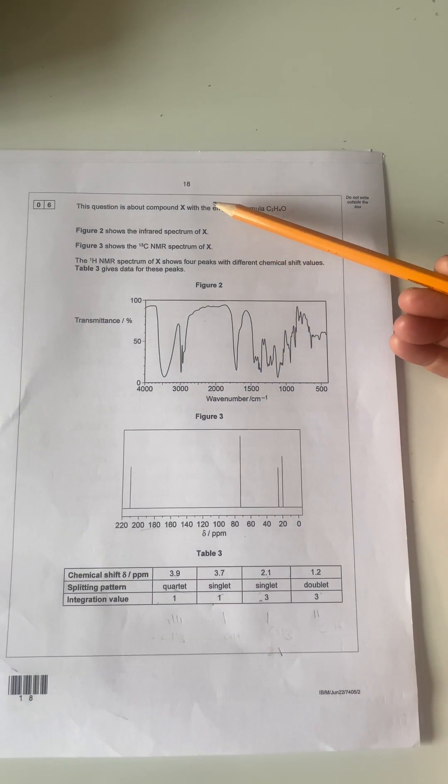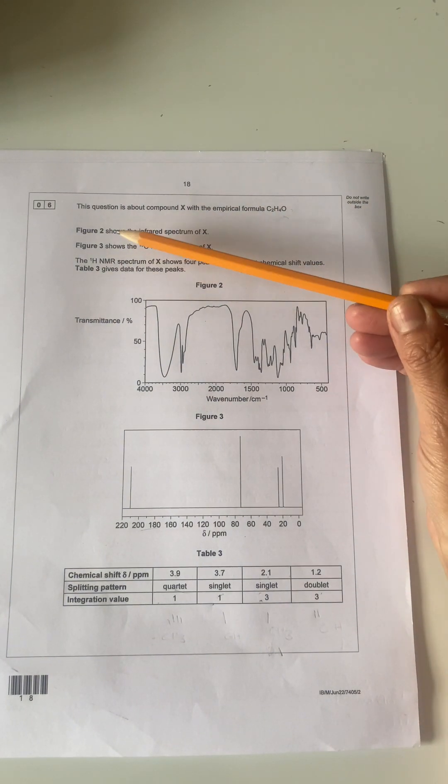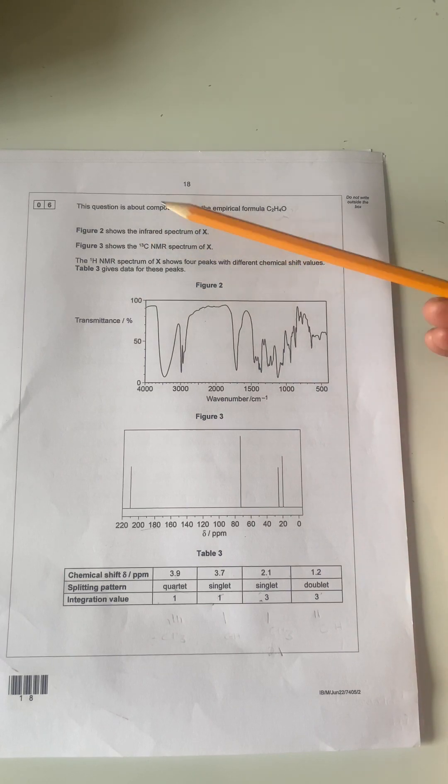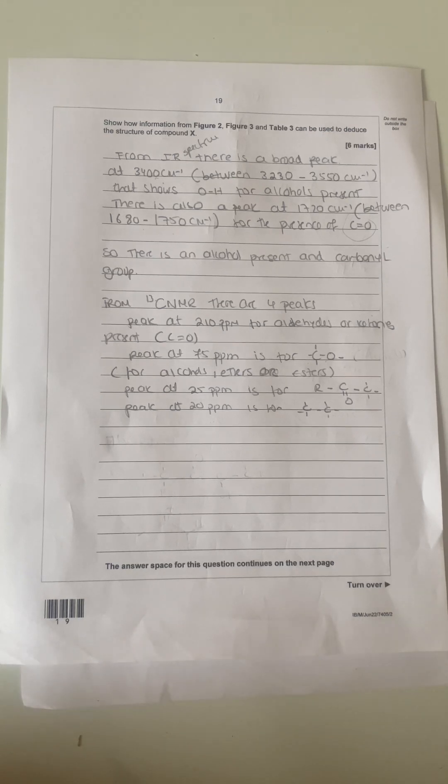This question is about compound X with the empirical formula C2H4O. Figure 2 shows the infrared spectrum of X, figure 3 shows the carbon-13 of X, and the proton NMR of X shows four peaks with different chemical shift values. Use figures 2, 3, and table 3 to deduce the structure of compound X.